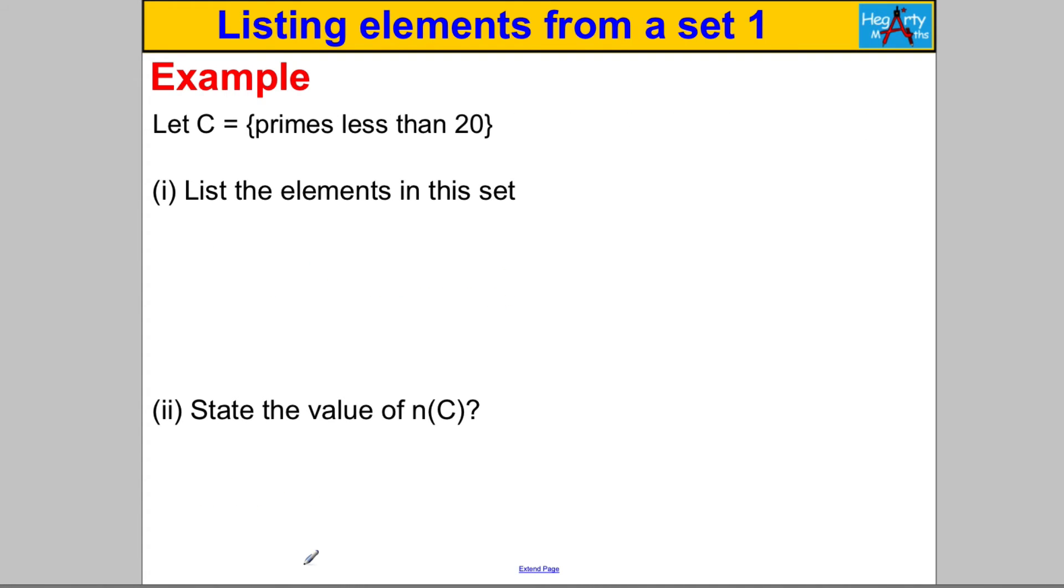Next one, pause the video, have a go. Let C be the primes less than 20. Let's list out the elements in this set. The primes less than 20: we have 2 is prime, 3 is prime, 5 is prime, 7, 11, 13, 17 and 19. They are our elements. What is the value of n(C)? Count these up: 1, 2, 3, 4, 5, 6, 7, 8. There are eight elements in the set C.